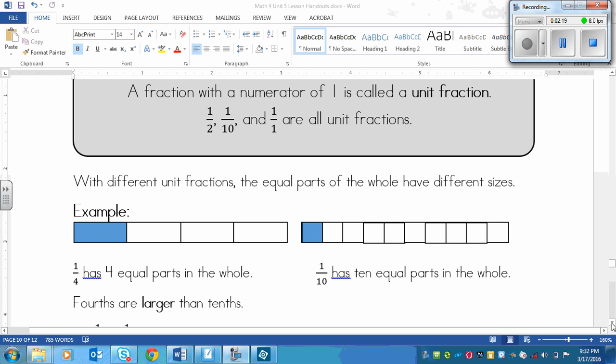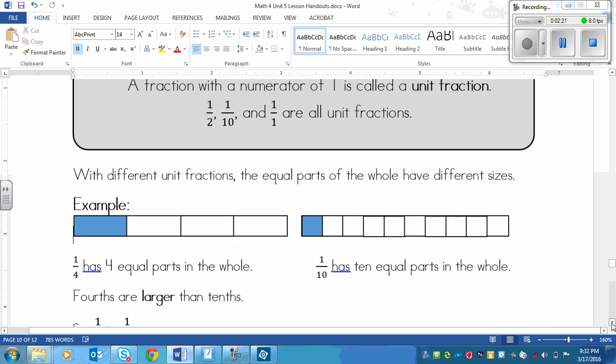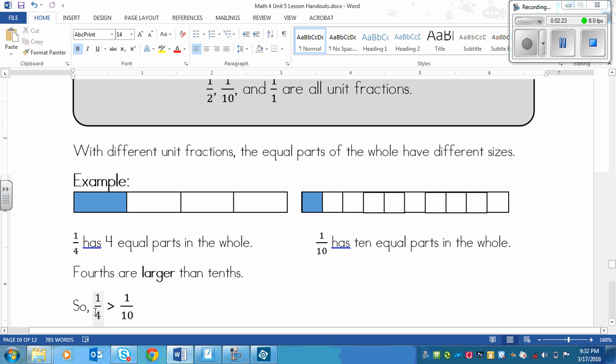So that means that since we're just coloring one in in each one, that one fourth is greater than one tenth. Now remember that the greater than symbol points towards the right. And think about it as the alligator. The alligator always eats the bigger number. So the opened part is toward the bigger number. And it's pointing at the smaller number with the arrow.